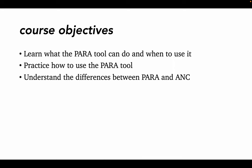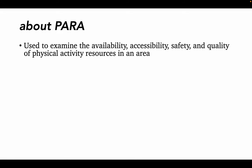However, PARA differs in key ways from the ANC, and may fit some study purposes better than others. PARA is used to audit the presence and the quality of physical activity resources in an area, and this tool can be used in a variety of settings, including urban, suburban, and rural areas.